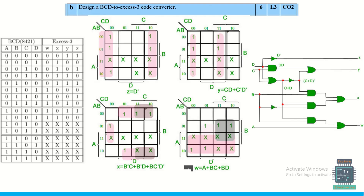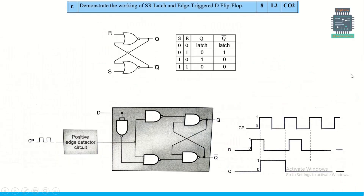For 'Design a BCD to XS3 code converter': take the BCD input and add 3 to get the XS3 code. Similarly, for binary to XS3, take the binary number and add 3. The resulting expressions are then implemented using basic logic gates.